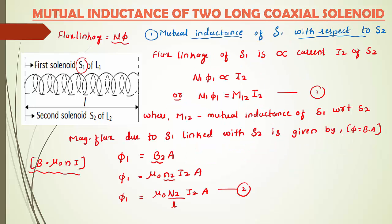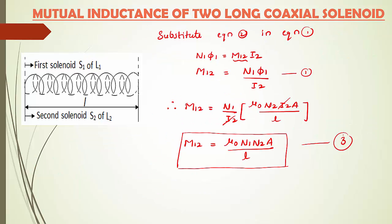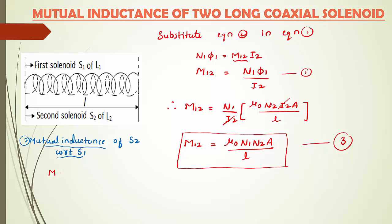This is for Case 1: mutual inductance of S1 with respect to S2. Now for Case 2 — mutual inductance of S2 with respect to S1 — we can write the equation directly. M21 = μ₀N2n1A / L, which is equation number 4. Both equations are symmetric since A and L are the same for both solenoids.